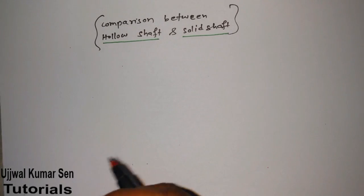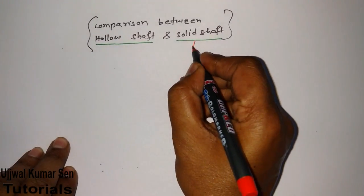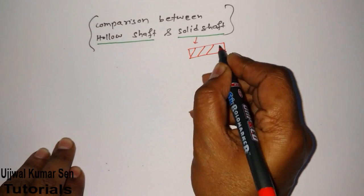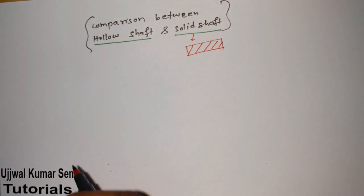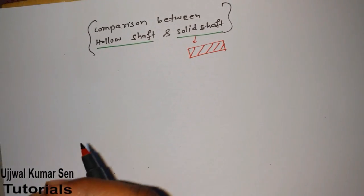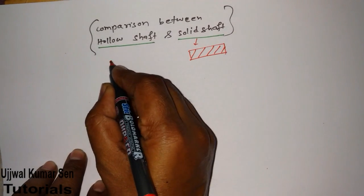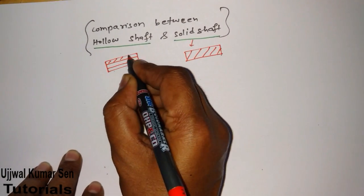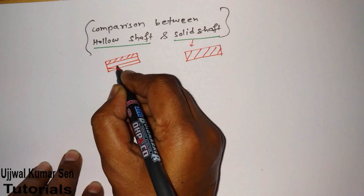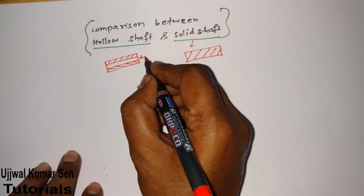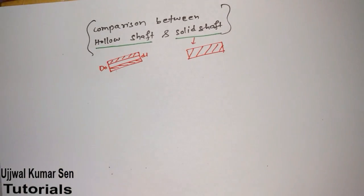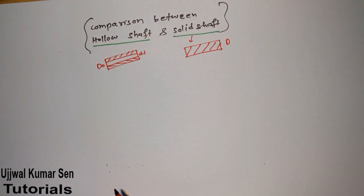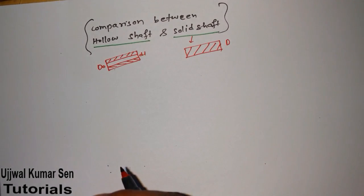First of all, what is a solid shaft? The shaft is completely solid — there is no hollow portion. And what is a hollow shaft? If the shaft is having two diameters — an internal diameter and an external diameter — that is a hollow shaft. A solid shaft has only one diameter D.